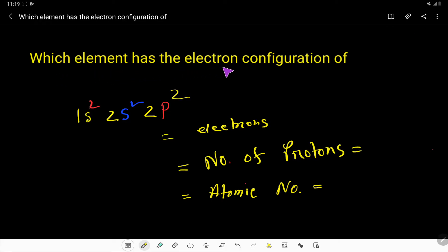Which element has the electron configuration of 1s2 2s2 and 2p2? Okay, so to find out the name of this element, at first we have to count the number of electrons present here. So here in 1s2 we are getting two electrons, and in 2s2 we are getting also two electrons, and in 2p2 we are getting two electrons.